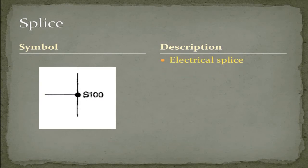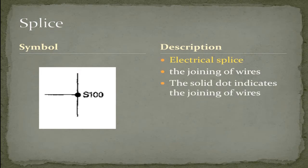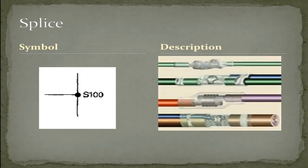An electrical splice. The joining of wires. The solid dot indicates the joining of wires. Here's an illustration of some splices. Although this is just one example, splices can be made in many different ways, including in the pigtail connections where more than one wire goes to one connection and leaves as one.